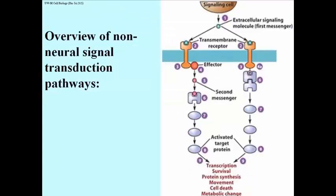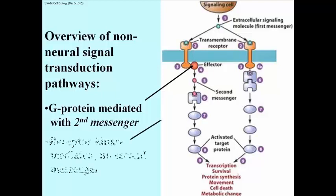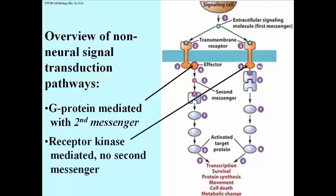Let's compare the G-protein and enzyme-linked signal transduction pathways in an overview. G-protein signal transduction involves the intracellular generation of second messenger molecules, for example cyclic AMP, while enzyme-linked signal transduction does not involve second messengers.